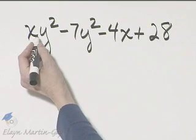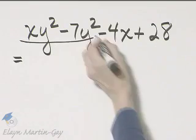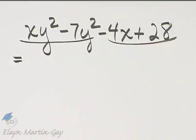Since this has four terms, let's try factoring by grouping. I'll group the first two and then the last two.